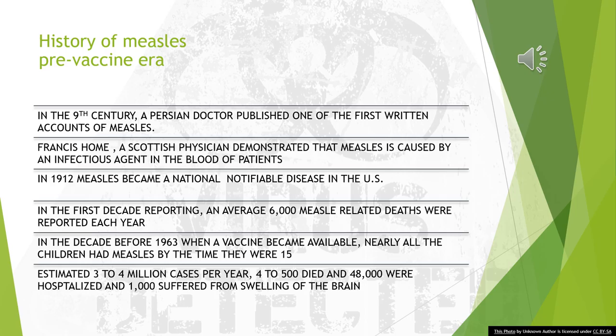History of measles — pre-vaccine era. In the ninth century, a Persian doctor published one of the first written accounts of measles. Francis Home, a Scottish physician, demonstrated that measles is caused by an infectious agent in the blood of patients. In 1912, measles became a national notifiable disease in the United States.